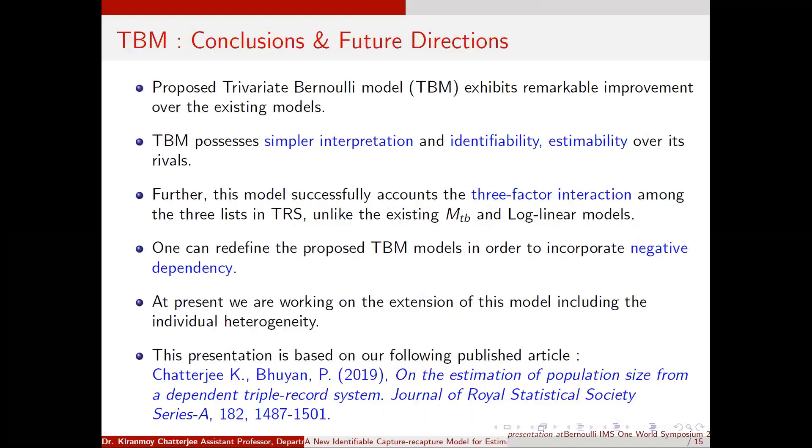I conclude that our proposed TBM Trivariate Bernoulli model exhibits a remarkable improvement over the existing models. TBM possesses simpler interpretation and identifiability, estimability over its rivals. Further, this model successfully accounts for the three-factor interaction among the three lists in TRS, unlike the existing MTB and LM models. One can redefine the proposed TBM models in order to incorporate negative dependency. At present we are working on the extension of this model including the individual heterogeneity.